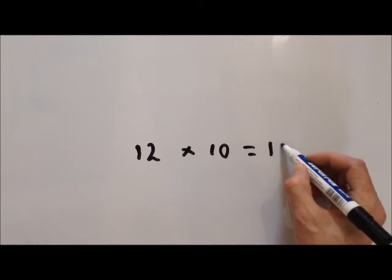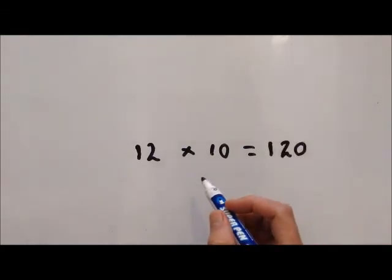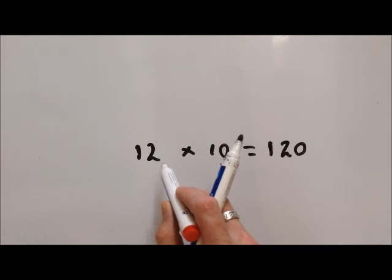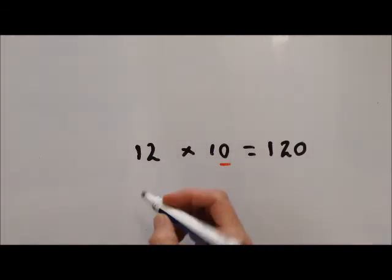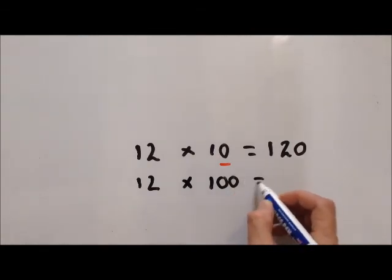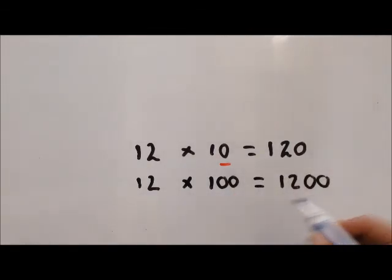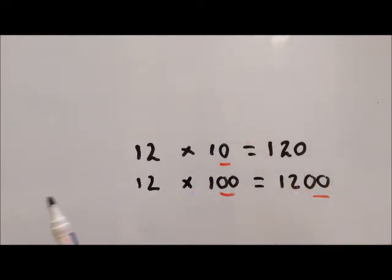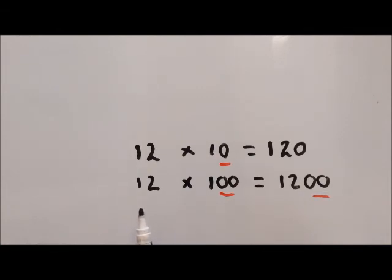The answer is 120. The traditional method would always be to take this zero off and place it on the end of our number, and that works generally. So if we have 12 multiplied by 100, there are two zeros, which would equal 1200. These two zeros are taken off and stuck on the end of our number. This method kind of works, but we need to conceive it as this number moving left or right along the columns, especially when we multiply and divide decimals.